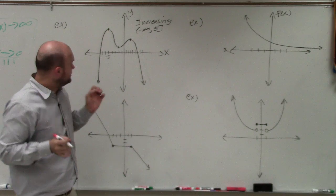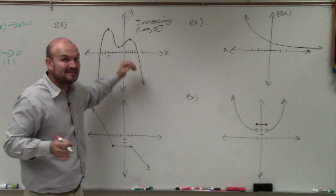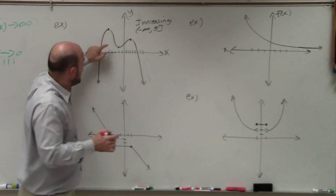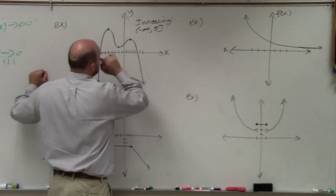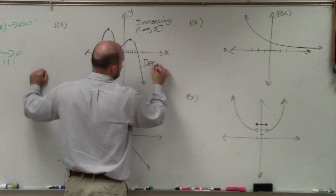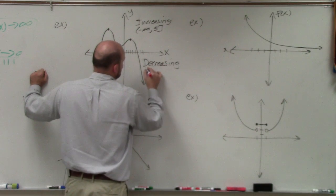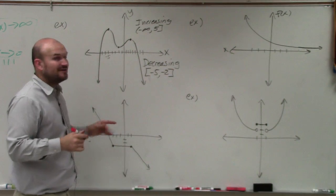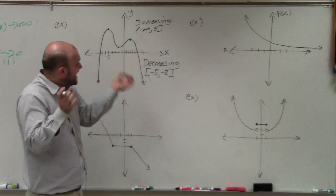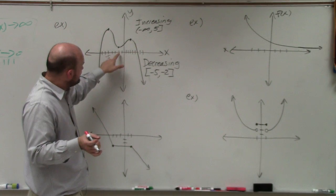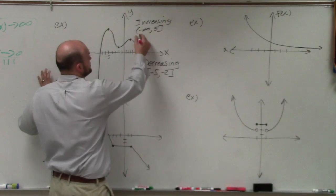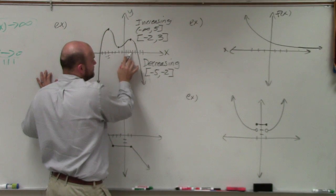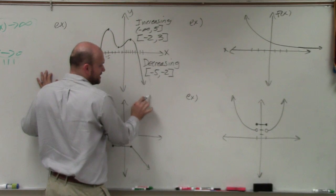Then from negative 5 to the next value, the graph is decreasing. I'm not looking at what y-values it's decreasing to — it's just decreasing from the x-value of negative 5 to negative 2. So I can say the graph is decreasing on the interval negative 5 to negative 2. However, then the graph starts going back up increasing, from x = negative 2 all the way to x = 3. So it's also increasing on the interval negative 2 to 3. Then from x = 3 onward, it starts decreasing again.